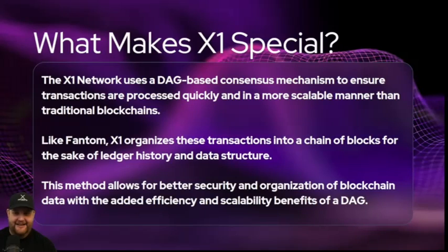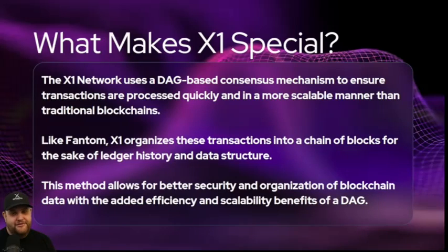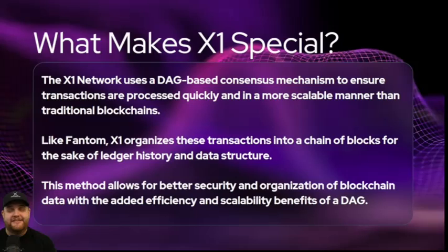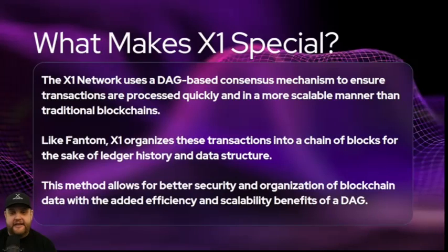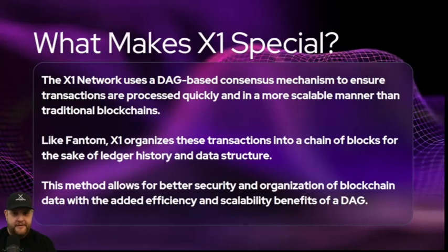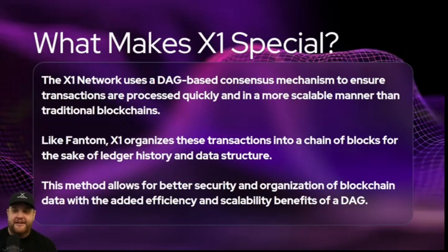What makes X1 special, and why is it not a centralized blockchain? The X1 network uses a DAG-based consensus mechanism to ensure transactions are processed quickly and in a more scalable manner than traditional blockchains. Like Fantom, X1 organizes transactions into a chain of blocks for the sake of ledger history and data structure. When you go to the X1 block explorer, you still see blocks and transactions within those blocks, helping maintain the ledger history and data structure.